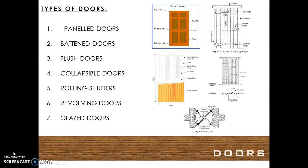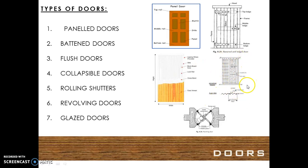The different types of doors are: panel doors, batten doors, flush doors, collapsible doors, rolling shutters, revolving doors, and glazed doors.